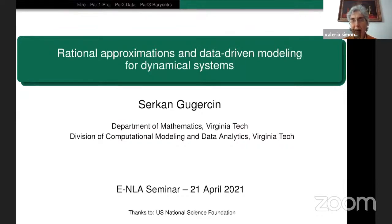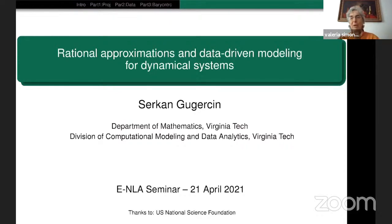He is professor at the Department of Mathematics and Division of Computational Modeling and Data Analytics at Virginia Tech. The best way to identify his field of interest is described on his webpage: his research lies in the area of model reduction, whose primary goal is to replace large-scale dynamical systems with lower-dimensional dynamical systems, having as near as possible the same input-output response characteristics as the original one.